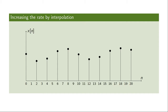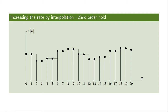Interpolation refers to the process of taking a signal, increasing the number of samples, and filling in the samples that we do not have in the original signal. There are many different ways of doing that. One of the simplest ways is what is referred to as a zero-order hold, where we simply duplicate samples in the original signal, creating equal copies of the signal to fill in the blanks. A slightly more advanced strategy is linear interpolation.